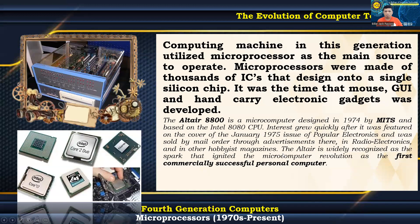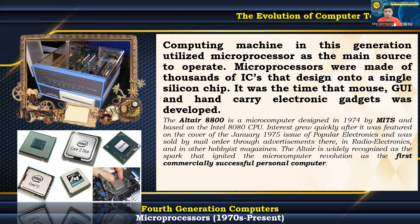Computing machines in the fourth generation utilized microprocessors as the main source to operate. Microprocessors were made of thousands of ICs designed onto a single silicon chip. It was during this time that the mouse, GUI, and hand-carry electronic gadgets were developed. The Altair 8800 is a microcomputer designed in 1974 by MITS, based on the Intel 8080 CPU. It was featured on the cover of the January 1975 issue of Popular Electronics and is widely recognized as the spark that ignited the microcomputer revolution as the first commercially successful personal computer.